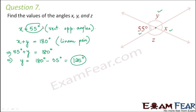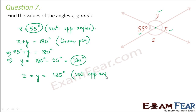We found out y and we found out x. What would be z? z will be equal to y because z and y are vertically opposite angles. So z equals y equals 125 degrees, because again these are vertically opposite angles. So just keeping in mind the properties, you can find unknown values: x is 55 degrees, y is 125 degrees, and z is 125 degrees.